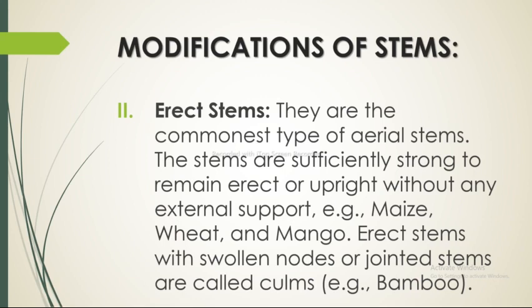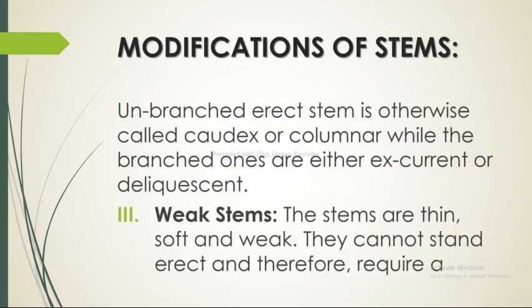The second type is erect stems — the commonest type of aerial stems. These stems are sufficiently strong to remain erect or upright without any external support, for example maize, wheat, and mango. Erect stems with swollen nodes or jointed stems are called culms, for example bamboo. An unbranched erect stem is otherwise called the caudex or columna, while the branched ones are either excurrent or deliquescent.